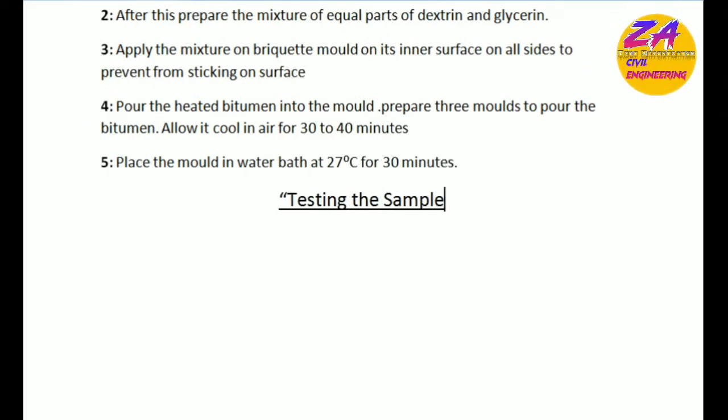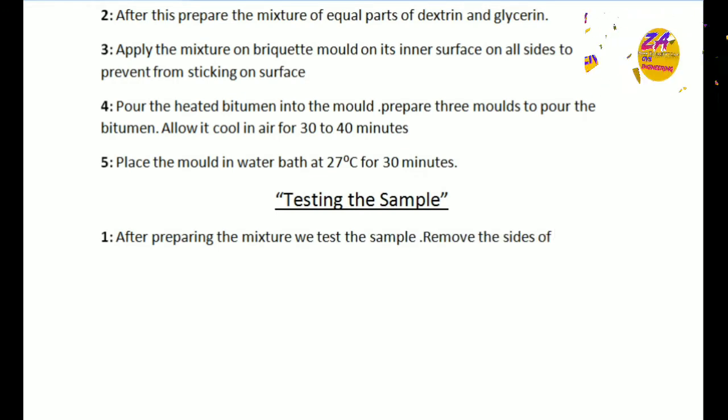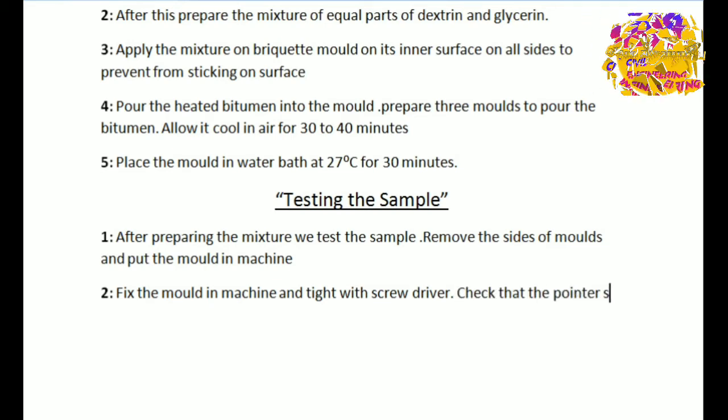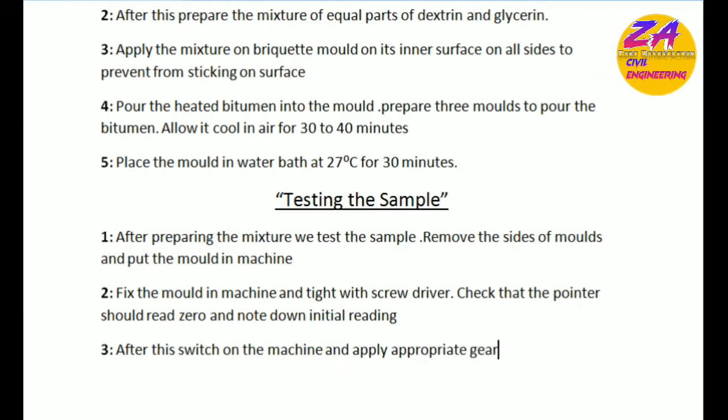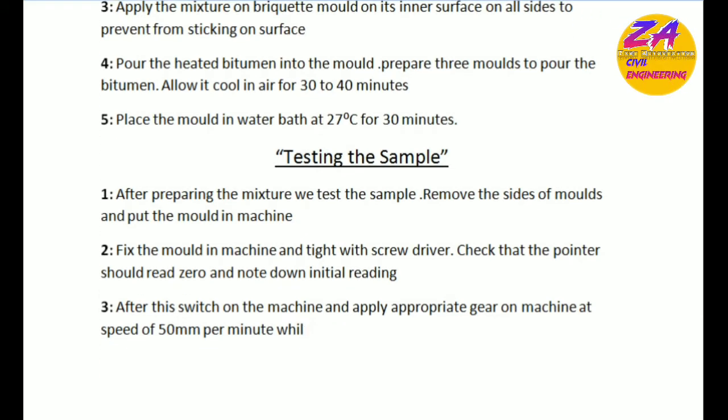The next step is testing the samples. After preparing the mixture, we test the samples. Remove the sides of the molds and put the mold in the machine. Fix the mold in the machine and tie it with screw drives. Check that the pointer should read zero and note down the initial reading. After this, switch on the machine and apply the appropriate gears at a speed of 50 millimeters per minute. While one side remains fixed, the other is pulled apart.